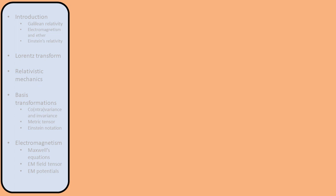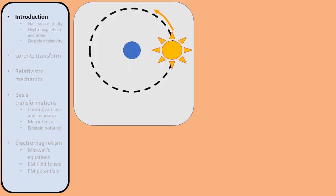To understand the foundations of Einstein's theory of special relativity, we must first go back to some much older ideas. The ancient Greeks believed that the Earth was the centre of the universe, and that the Sun, planets and stars all revolved around the Earth. This is called the Ptolemaic or geocentric worldview.